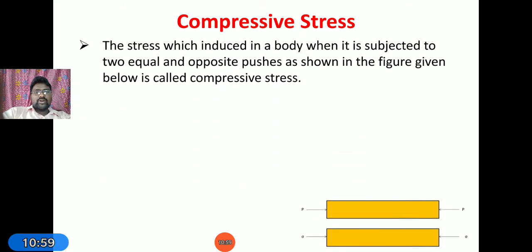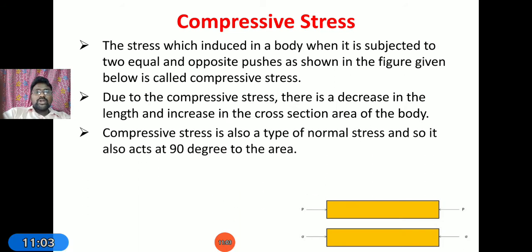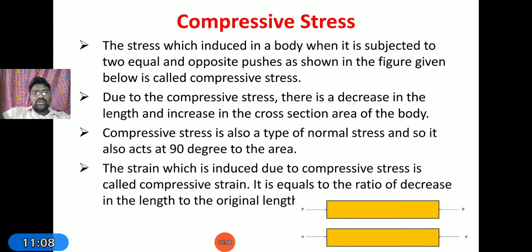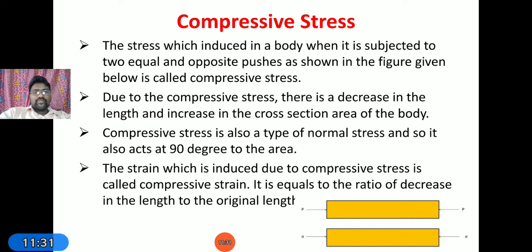Compressive stress is similar to tensile stress but here the material is subjected to two equal and opposite pushes. Due to these compressive forces the length of the material decreases. Due to this applied force some internal resistance is offered, and this resisting force per unit area is known as compressive stress. Compressive stress is also a type of normal stress and acts at 90 degrees to the area of the bar. The strain induced due to compressive stress is called compressive strain, which equals decrease in length divided by original length. Generally this value is negative; the compressive nature is indicated by placing it in brackets.